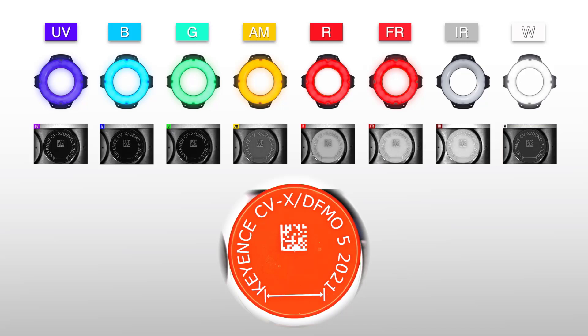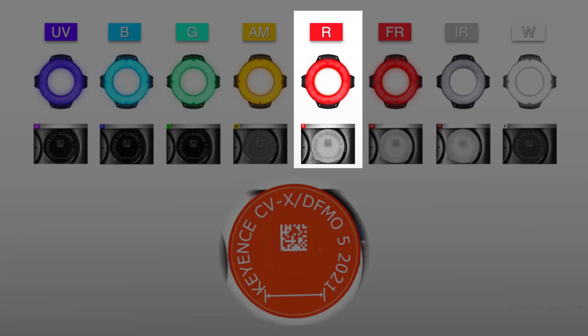For example, the cap appears red to human eyes because the cap reflects red light. Likewise, the cap appears brighter in the monochrome image while capturing using red light because more light is reflected back into the image sensor.